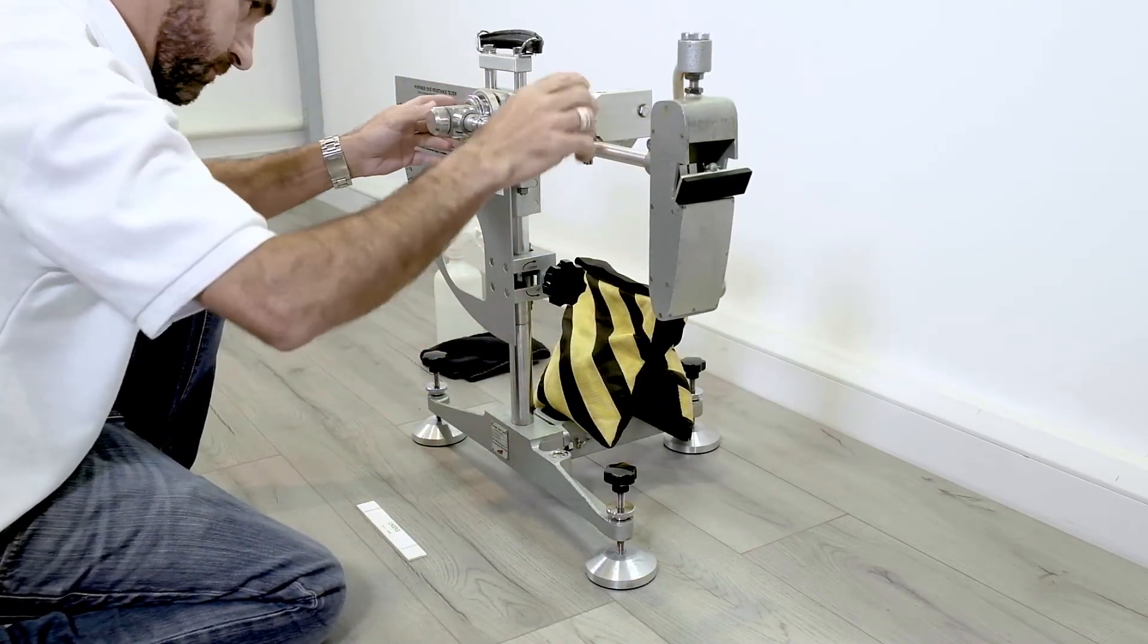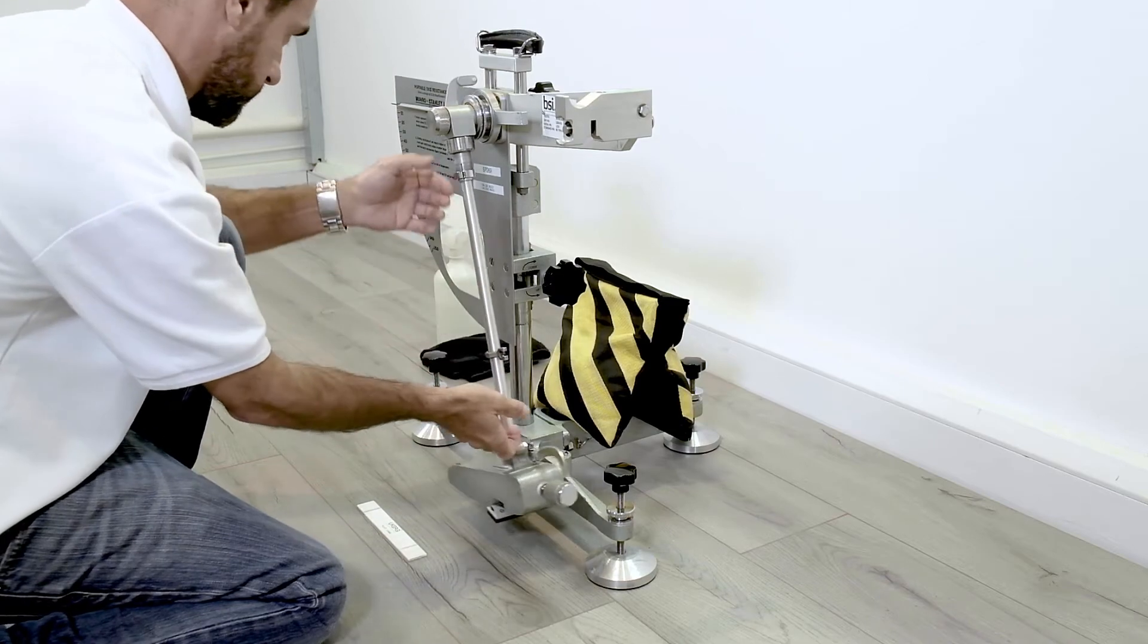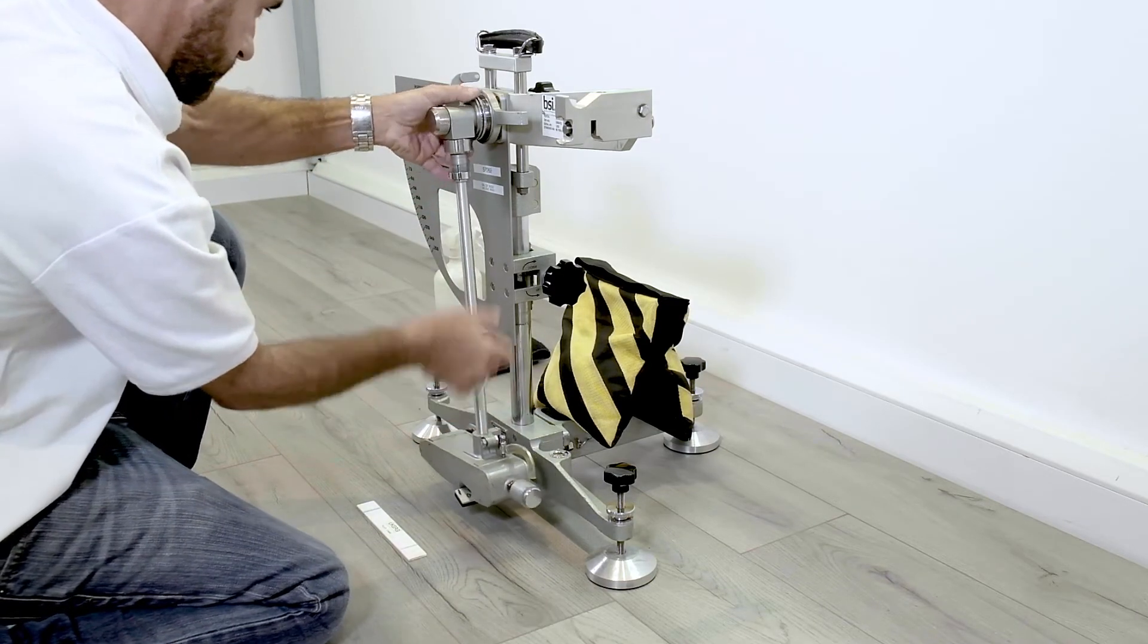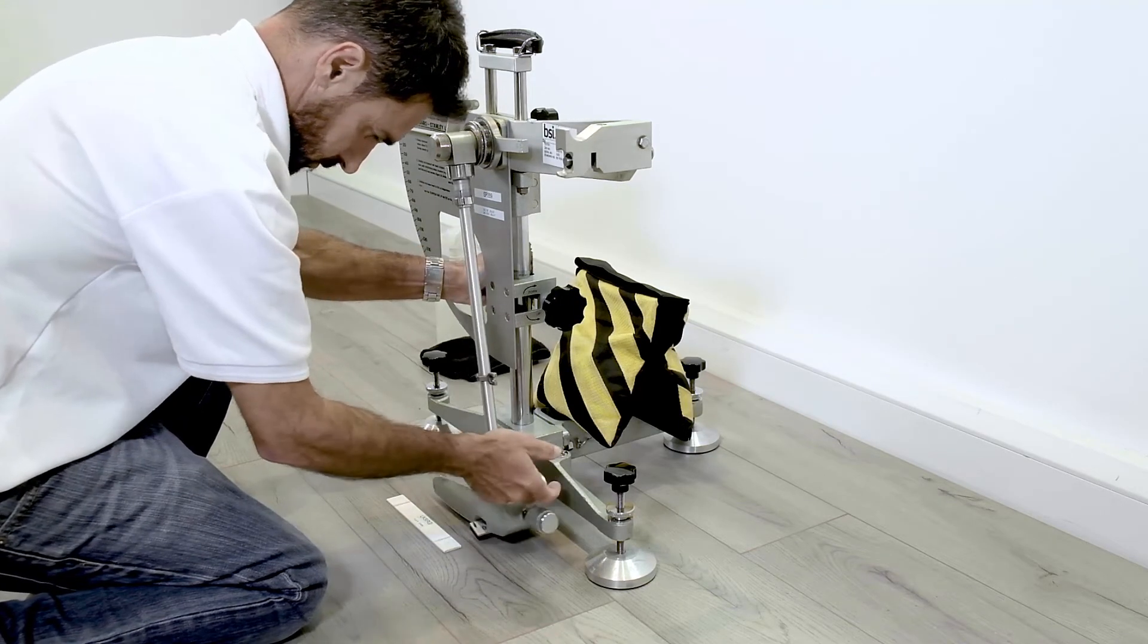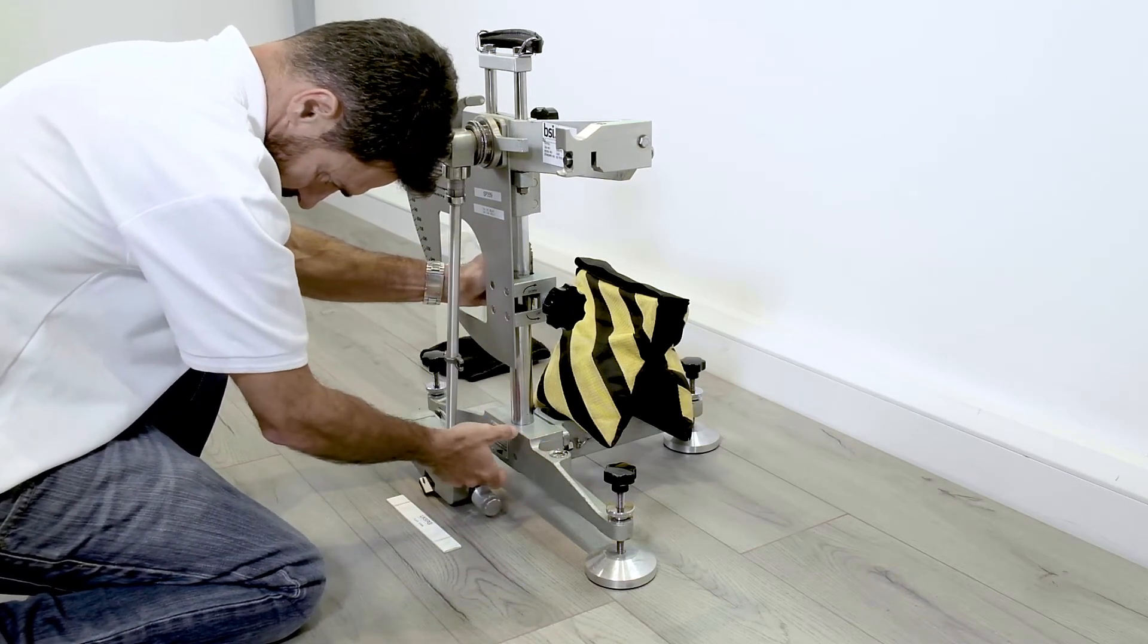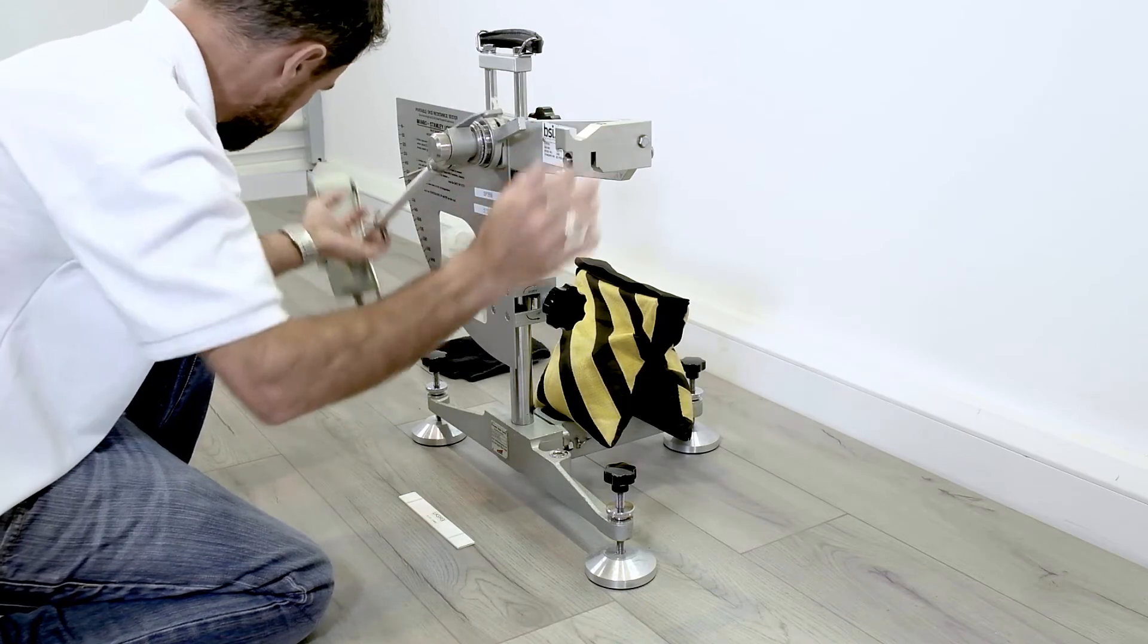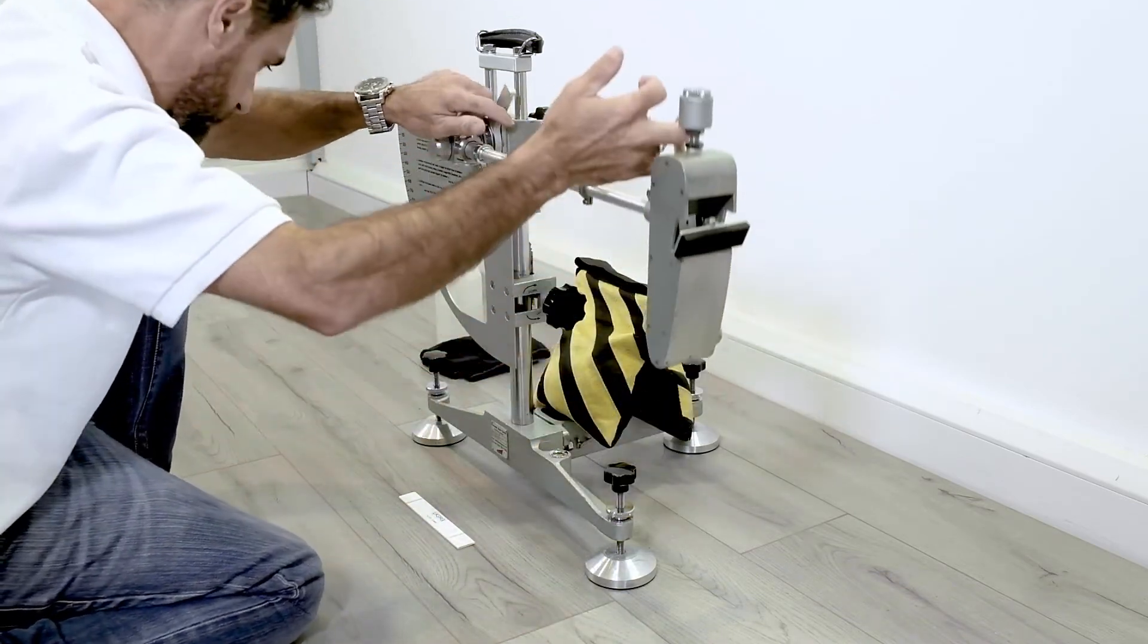Once again, the pendulum is calibrated to zero and verified on the three verification surfaces. The contact footprint is set and the surface is then ready to be tested in the three orientations.